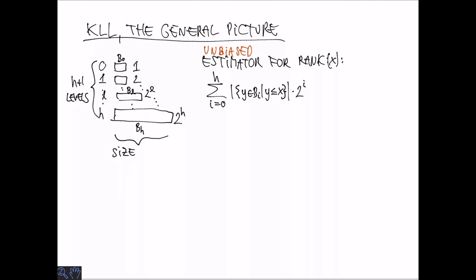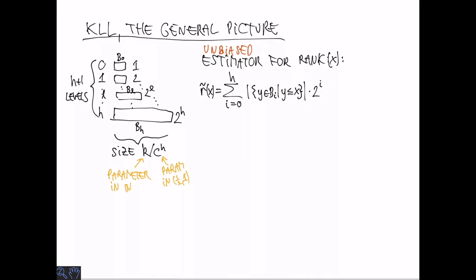So far I only told you that the size of the buffers are going to grow geometrically, but we need to specify exactly what size the largest buffer should be. And here we introduce a parameter K, and ask that the largest buffer has size K divided by C to the H, where C was this parameter between 1 half and 1. And we'll talk about how to set K later. So now we're interested in the difference between the estimator for the rank and the rank itself. And we can think about this or express this error in terms of all the errors made in the compaction step.